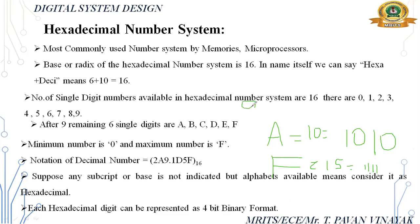Consider 7: its binary value is 111, which is only 3 bits. But since we need 4 bits for hexadecimal, we add a leading zero to get 0111. So that gives us the 4-bit representation.